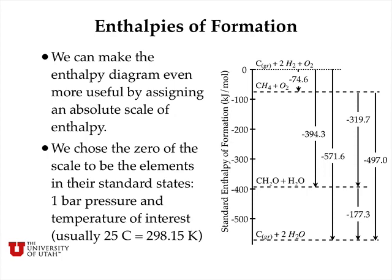We can make this energy diagram even more useful by assigning an absolute scale of enthalpy instead of just dealing with individual differences. This is the same diagram as before, except at the top I've added graphite, two hydrogen molecules, and an oxygen molecule as a different way of combining these elements — now all in elemental form. We choose the zero of this scale to be the elements: molecular hydrogen, molecular oxygen, and graphite at one bar pressure and at the temperature of interest, which is usually 25°C or 298.15 K.